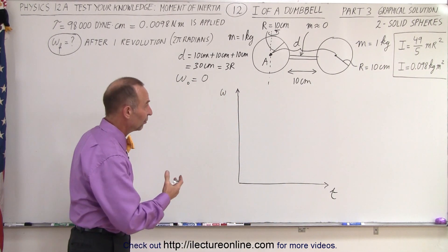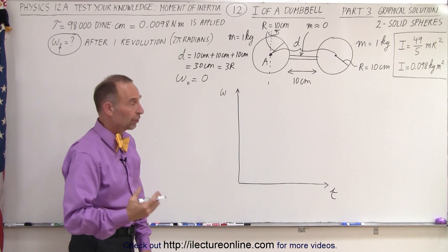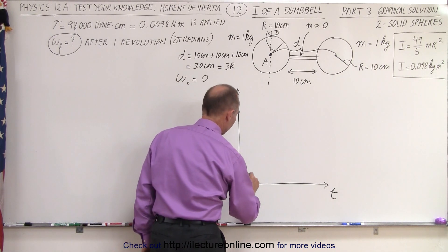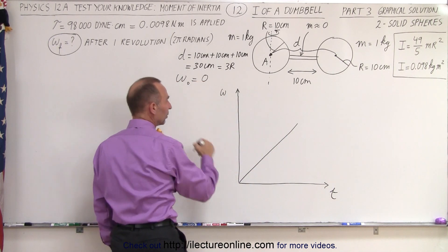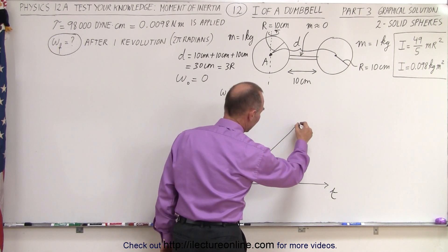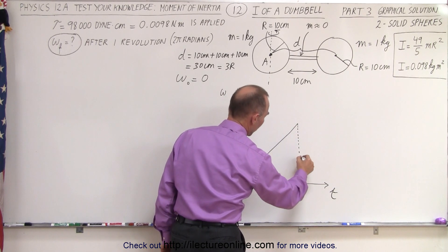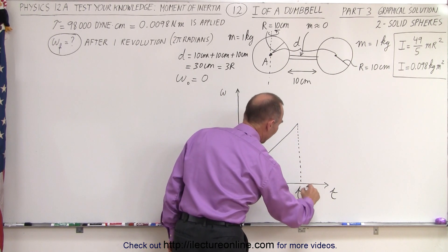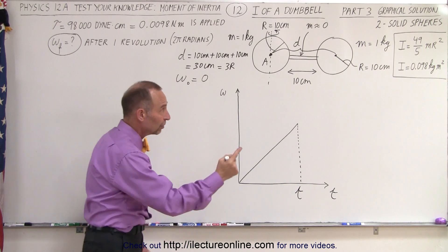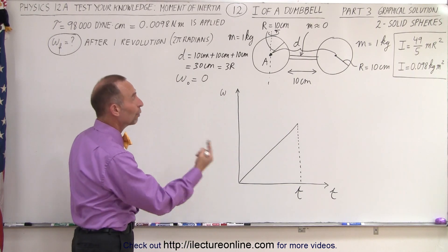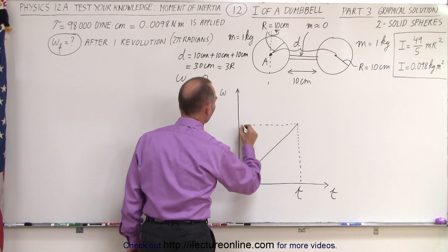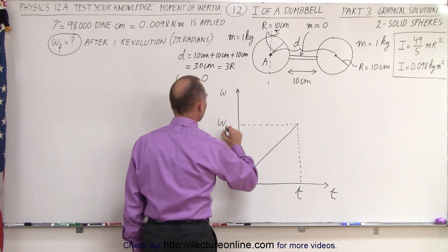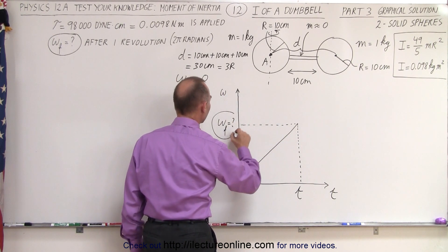And then, since we have an acceleration, and we assume linear acceleration, our graph should look something like this, because we start at zero omega when time equals zero, and we reach a final omega when the right amount of time has elapsed, when the dumbbell has made one complete revolution. So that means we will then have reached our final omega. That's the question. What is the final omega?